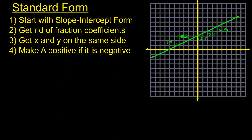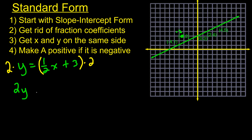For standard form, you start with slope-intercept form: y equals 1/2 x plus 3. It's hard to go directly from the graph to standard form. First, get rid of the fraction coefficients — I see 1/2, so I multiply both sides of the equation by 2. That gives me 2y on the left, and distributing on the right gives 1x plus 6.